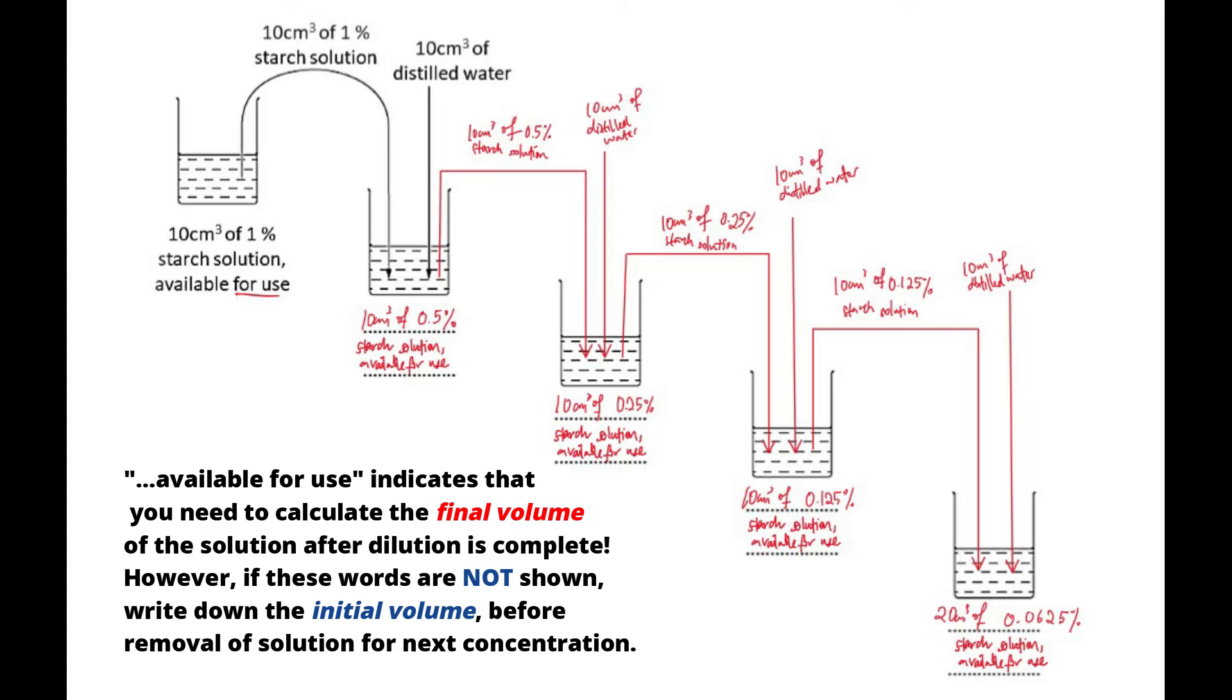1% becomes 0.5%, which is diluted to 0.25%, which is then diluted to 0.125%, and then 0.0625%. To achieve the final volume of 10 cm³ available for use, we take 20 cm³ of 1% starch solution and remove 10 cm³ of it and put it into the next beaker. And to that, we add 10 cm³ of distilled water, so equal amounts of the previous solution and distilled water in order to make 0.5% starch solution. This is 10 plus 10, so that's 20, but don't forget we remove another 10 in order to add to the next beaker. And therefore, 20 minus 10 would result in 10 cm³ of 0.5% starch solution available for use.